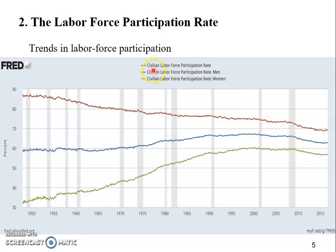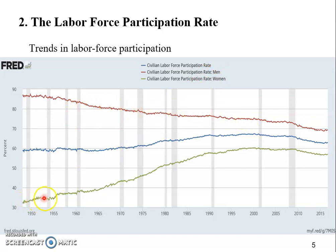The blue one in the middle is the overall civilian labor force participation rate — civilian meaning it does not include any military-related labor force. The top red or maroon line is the civilian labor force participation rate for men — the male rate. And the green one is the female rate. So here you can find the gender breakdown of the participation rate.